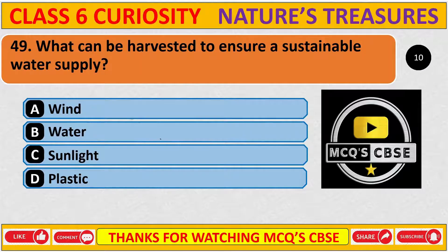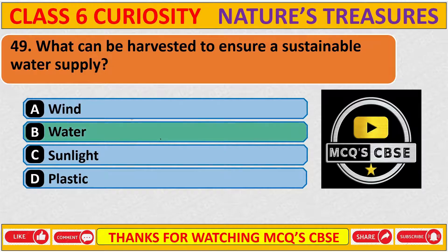What can be harvested to ensure a sustainable water supply? The correct answer is B: Water.